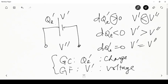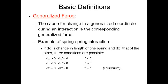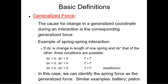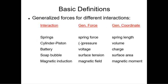From what we have done so far, we can identify the spring force as the generalized force for the generalized coordinate of spring length, and similar pairs for the battery and piston. For springs: spring force is the generalized force and spring length is the generalized coordinate. For the cylinder-piston: negative pressure (−P) is the generalized force and volume is the generalized coordinate. For the battery: voltage is the generalized force and charge is the generalized coordinate.